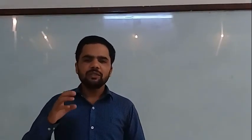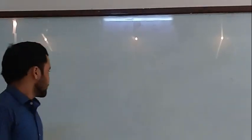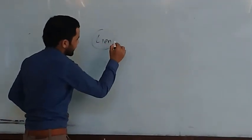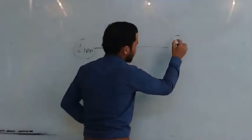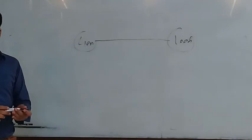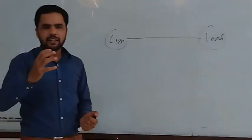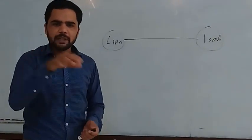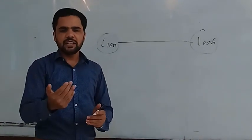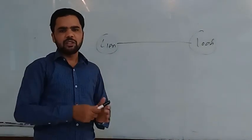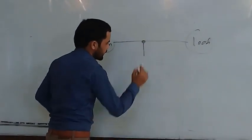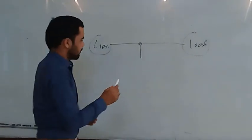Now let's see how the static synchronization compensator works. For example, this is the generator, this is the transmission line, and this is the load. The static synchronous compensator is basically placed at the midpoint of the transmission line for reactive power compensation and to increase the reactive power in the transmission line. Here we will put the static synchronized compensator.